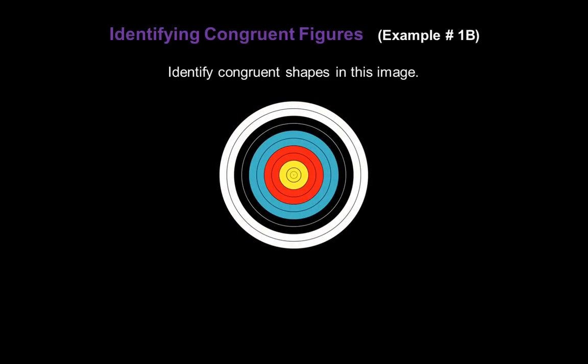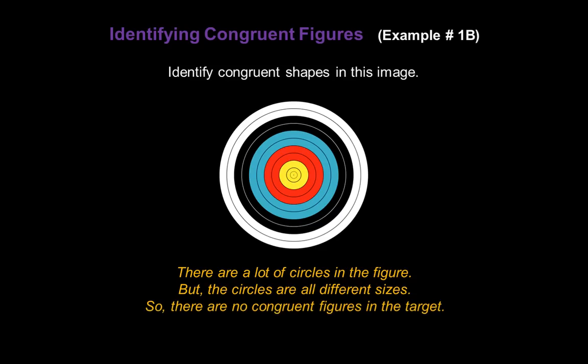Now identify congruent shapes in this image of a target. Well, there are a lot of circles in the figure, but the circles are all different sizes. So that means there are no congruent figures in the target.